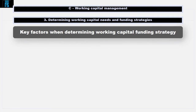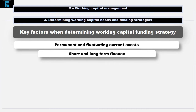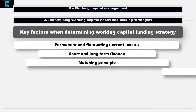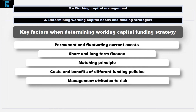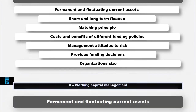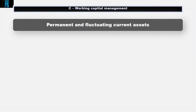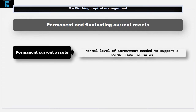What are the key factors when determining working capital funding strategies? Here you will look at permanent and fluctuating current assets, short and long-term finance, the matching principle, the costs and benefits of different funding policies, management's attitude to risk, previous funding decisions, and organisation size. Permanent current assets represent the normal level of investment needed to support a normal level of sales. If the company decides to expand and increase its sales, this core level goes up.